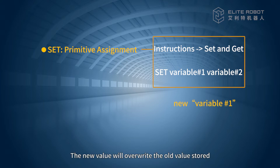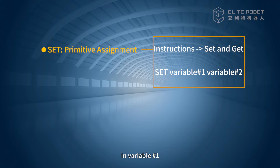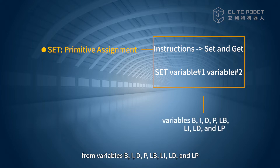The new value will overwrite the old value stored in variable 1. Variable 1 and variable 2 can be selected from variables B, I, D, P, LB, LI, LD, and LP.